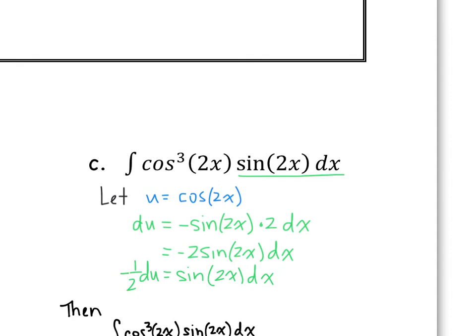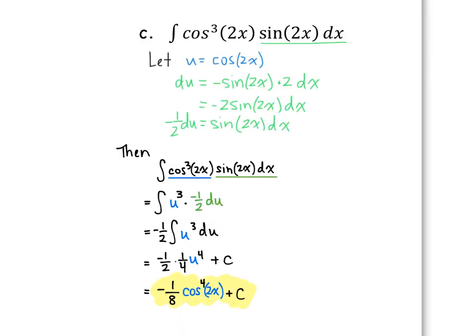In order to get just sine of 2x dx, we divide both sides by negative 2, so negative one half du equals sine of 2x dx. Now finish off the problem, make your u substitution, and see what you get in the end. So if cosine of 2x is u, we end up with the integral of u cubed times sine of 2x dx equaling negative one half du. Integrating and substituting back, we get cosine to the fourth power of 2x — don't forget your plus c.